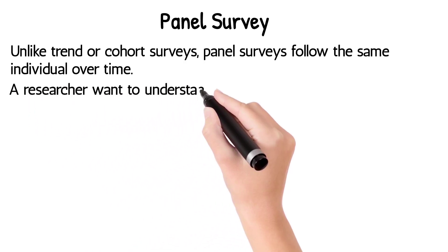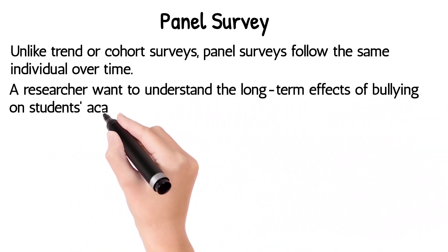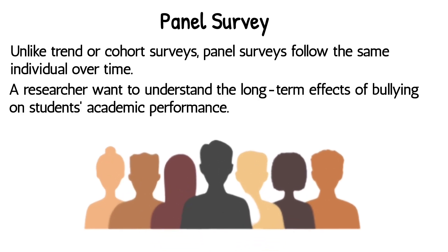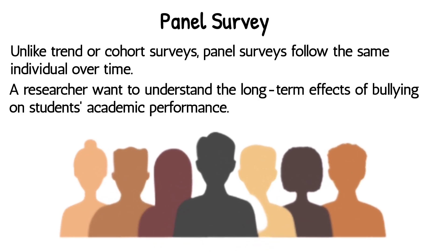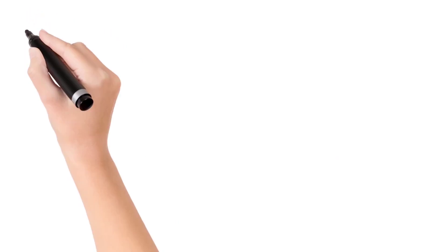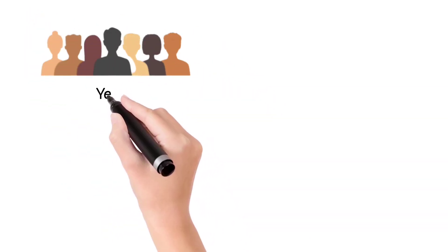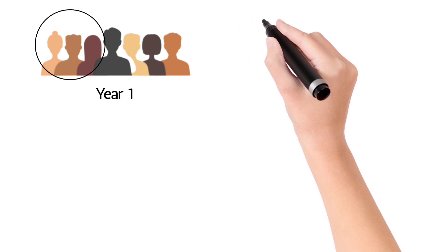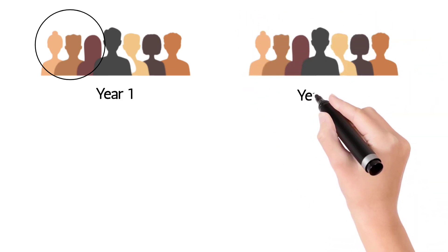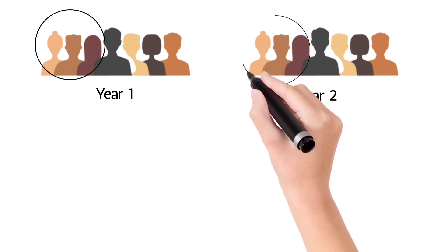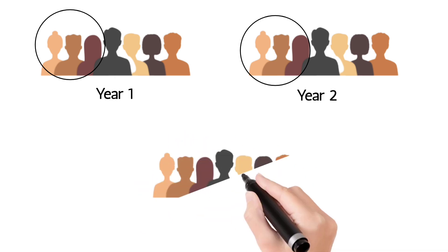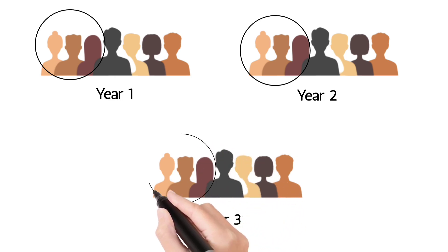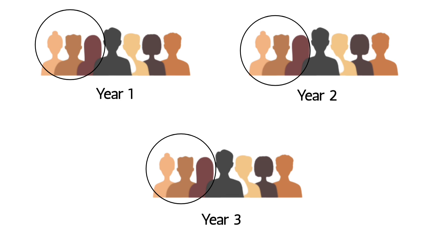A researcher wants to understand the long-term effects of bullying on students' mental health and academic performance. They select a group of students from different schools who have reported being bullied in sixth grade, then follow this group over the next three years until the end of eighth grade. The researcher collects baseline data on each student's mental health, academic performance, and emotional impact, then conducts yearly follow-up surveys with the same group. The sample will always be the same — as shown here, over the three years the samples have always been the same people. Panel study is the most rigorous of the three longitudinal designs.